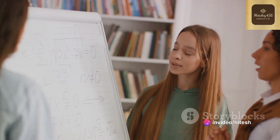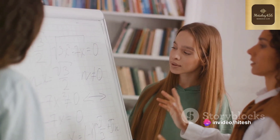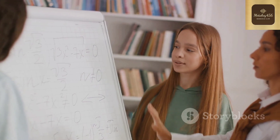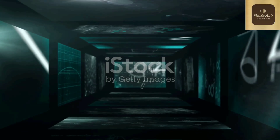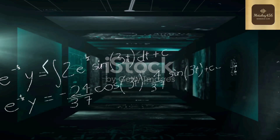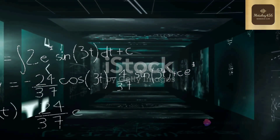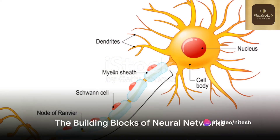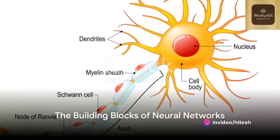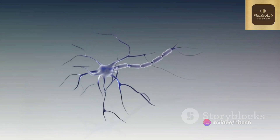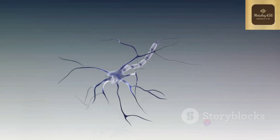Dive into the world of neural networks — the backbone of modern AI. It's not just about feeding data into a black box and waiting for the magic to happen. The real magic lies in the interplay of numbers, formulas, and functions that make these neural networks tick. Begin with the basic building block of a neural network: the neuron. Picture a neuron as a mathematical function.